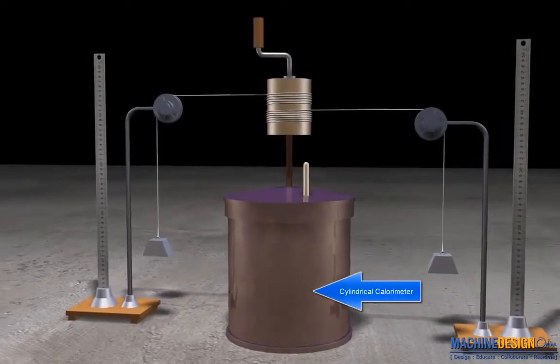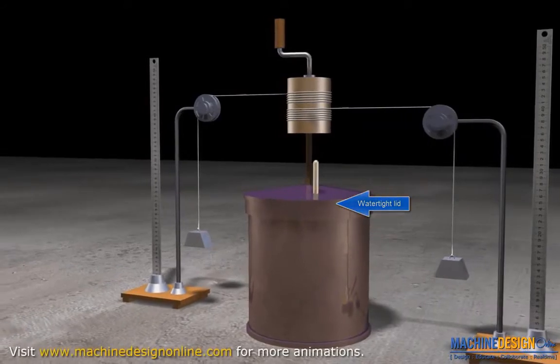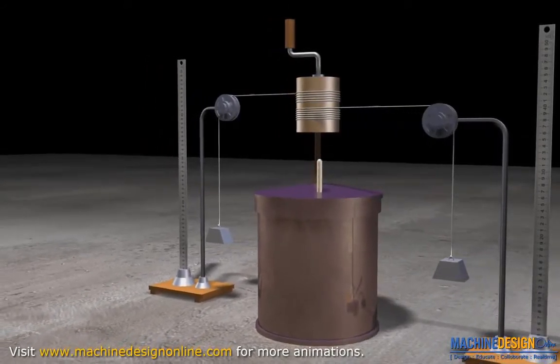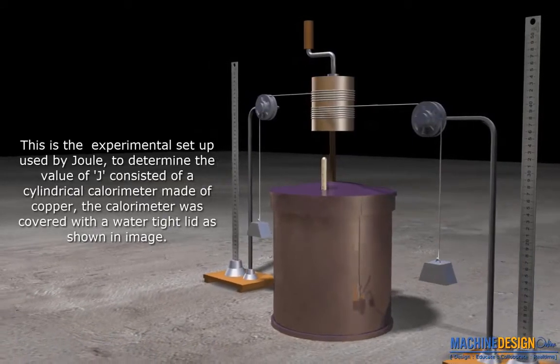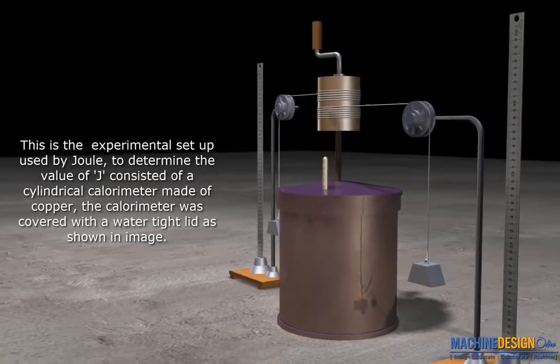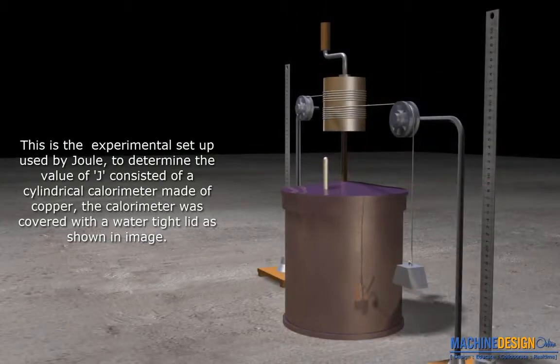Joule's Experiment for Determining Mechanical Equivalent of Heat. Displayed here is the experimental setup used by Joule to determine the value of J, consisted of a cylindrical calorimeter made of copper. The calorimeter was covered with a watertight lid.